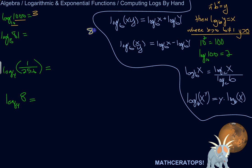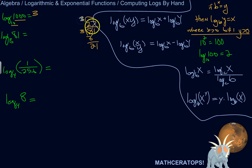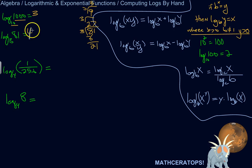81 divided by 3 is 27. 27 divided by 3 is 9. 9 divided by 3 is 3. So if I square 3, I get 9. If I cube it, I get 27. And if I raise it to the power of 4, I get 81. So the answer is 4 — I raise 3 to the power of 4 to get 81.